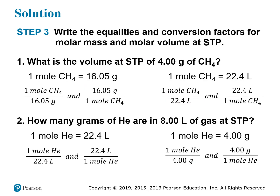For methane, the molar mass gives us 1 mole = 16.05 grams, and the molar volume is 22.4 liters per mole. For helium, the molar volume is the same — 22.4 liters per mole — but the molar mass of helium is only 4 grams per mole, not 16. So the difference between the two gases is in the molar mass, not the molar volume.